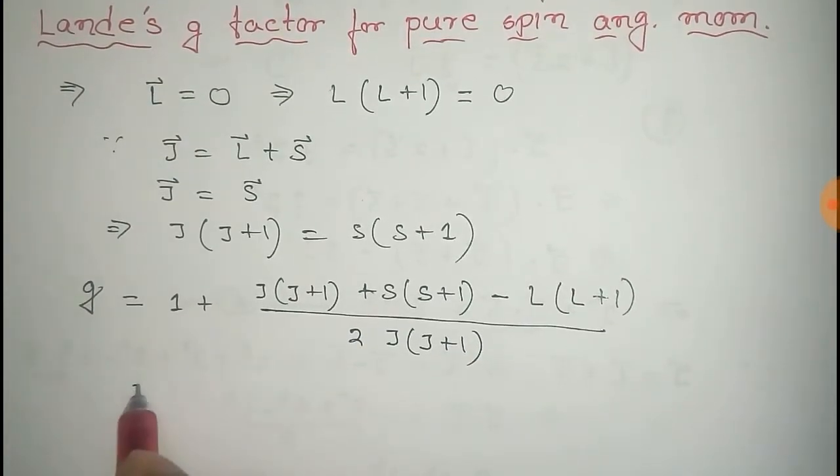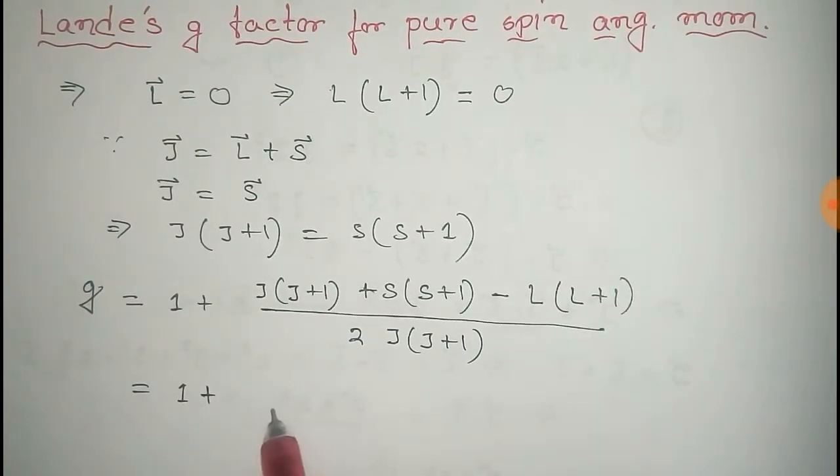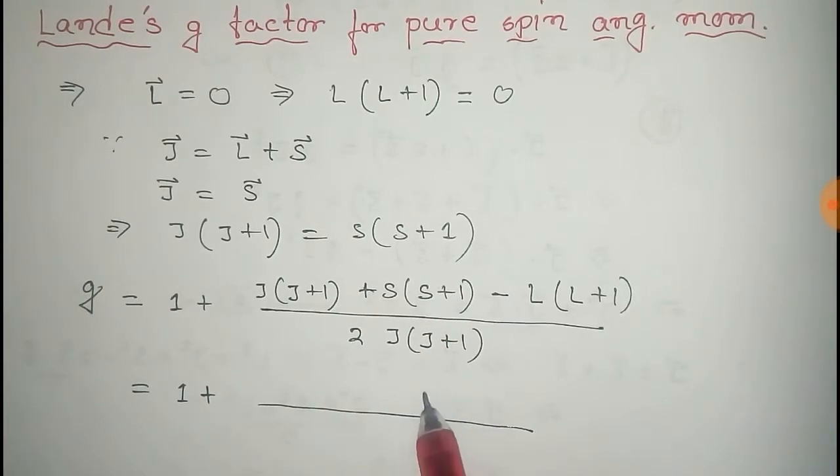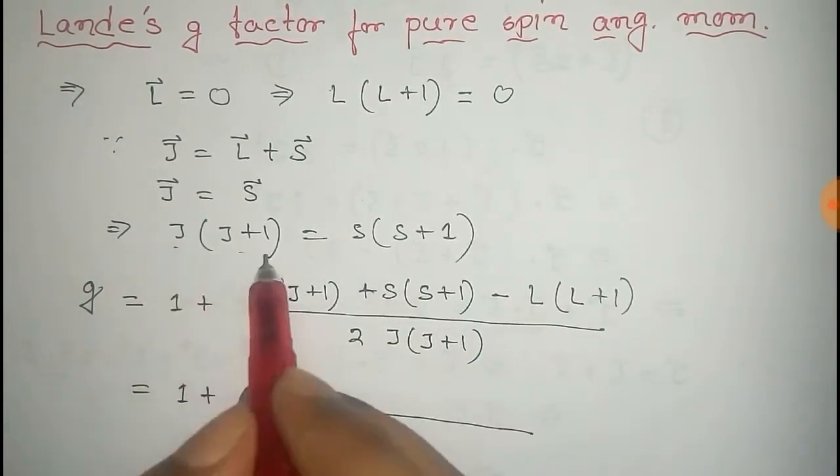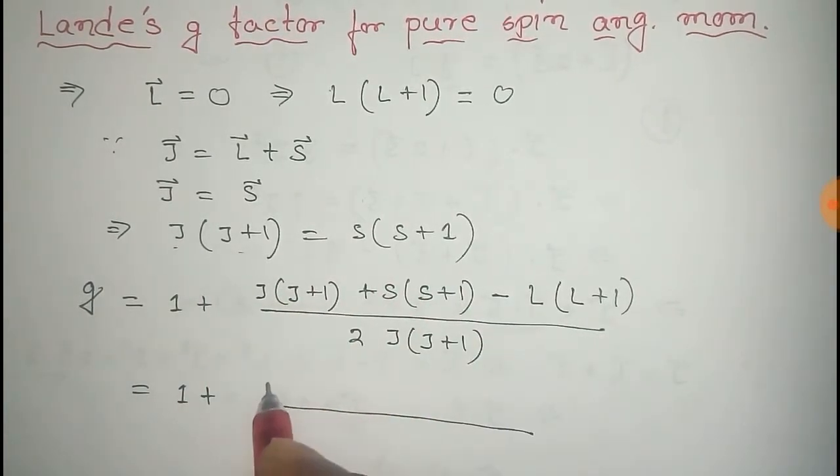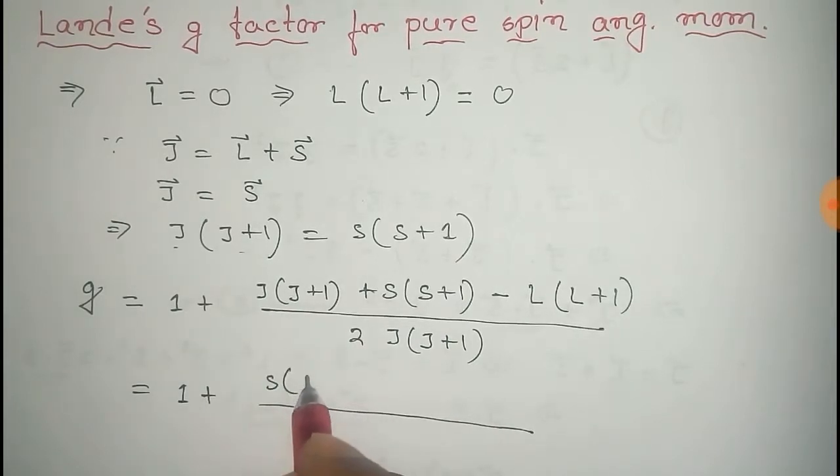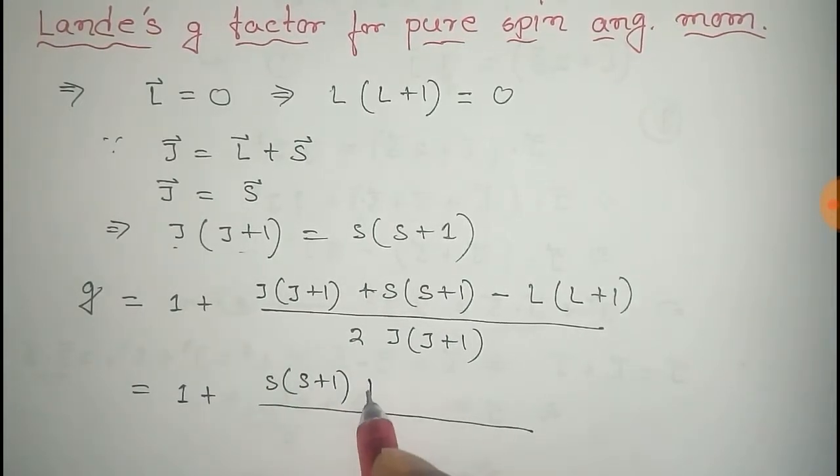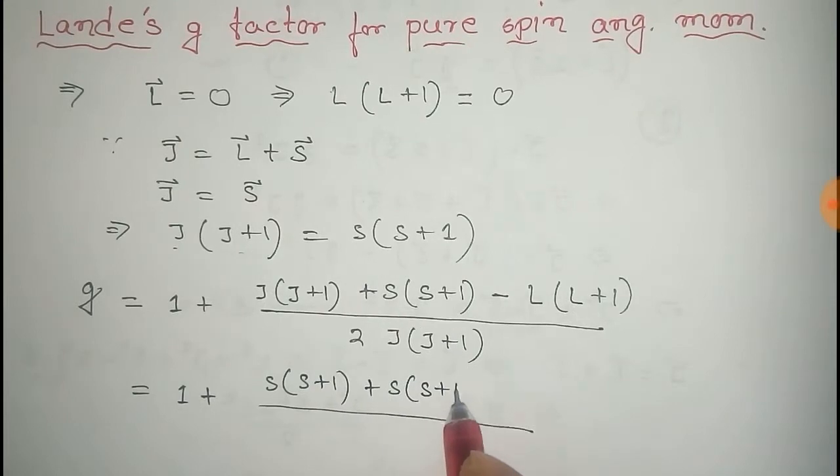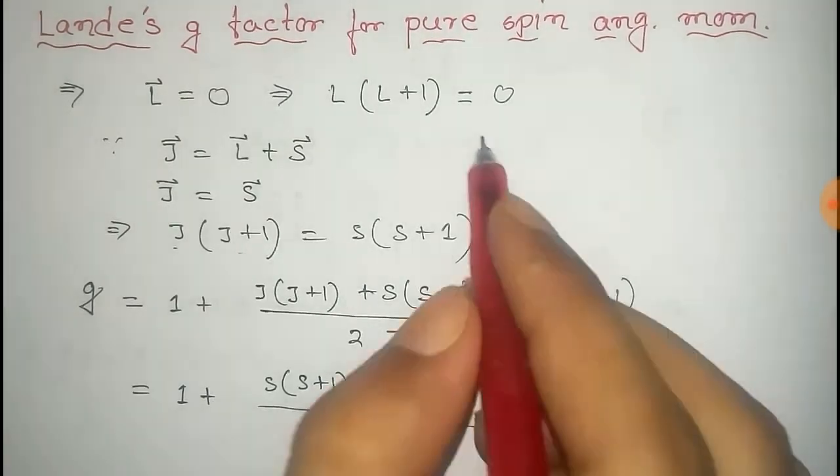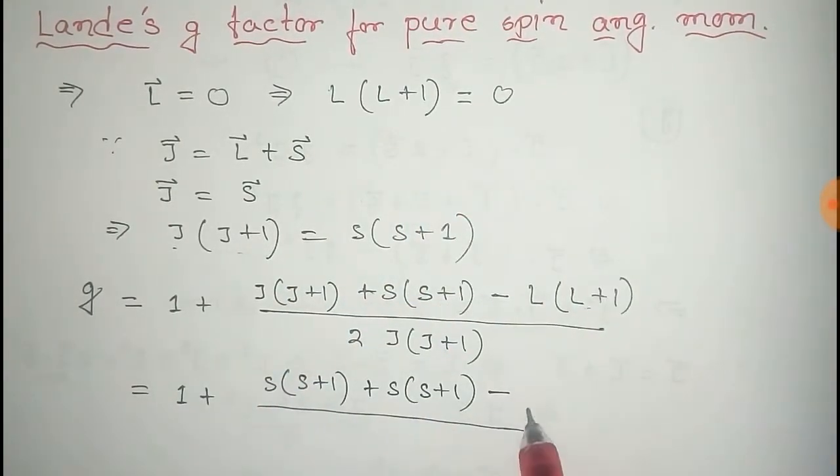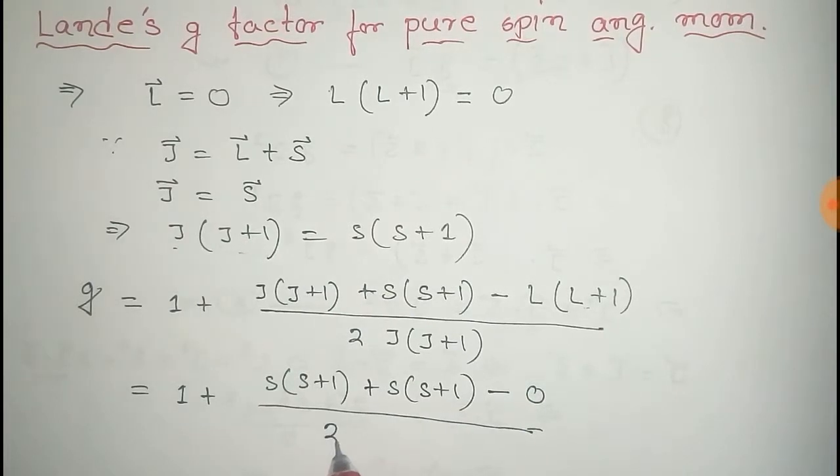Now put the value of J into J plus 1 from that case. So that equals to S into S plus 1 plus S into S plus 1, and the value of L into L plus 1 equals to 0, divided by 2 S into S plus 1.